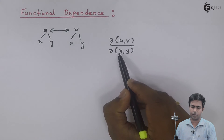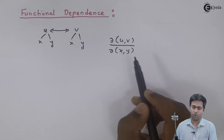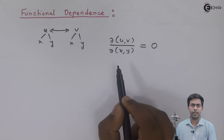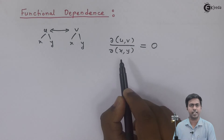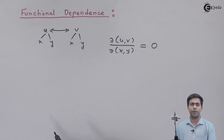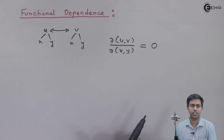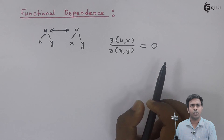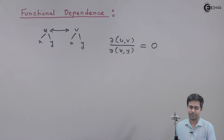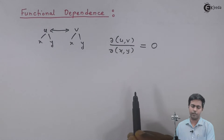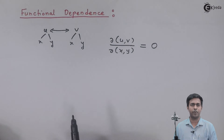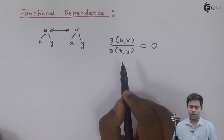If this Jacobian is equal to 0, then we say yes, u and v are functionally dependent on each other. But if we are not getting 0, then we say no, they are not functionally dependent. And if they are functionally dependent, then we can definitely find out the relationship between u and v.